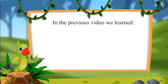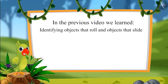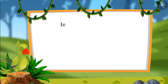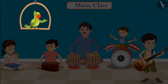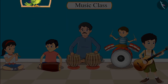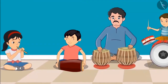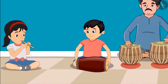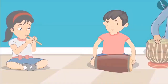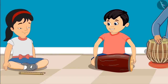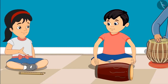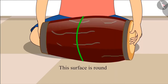Hello Kids! In the previous video we learned about identifying objects that roll and objects that slide. In this video we will see objects that can both roll and slide. Chotu and Pinky have music class today — Chotu is learning to play the dholak and Pinky is learning the flute. While practicing, Chotu notices the dholak is rolling, and Pinky explains it's because the surface of the dholak is circular.